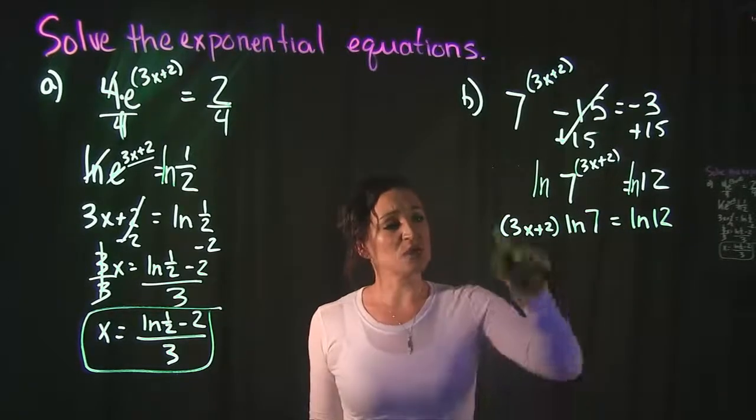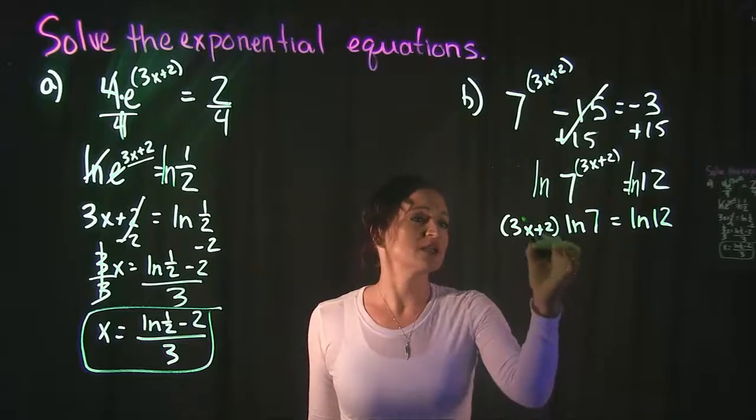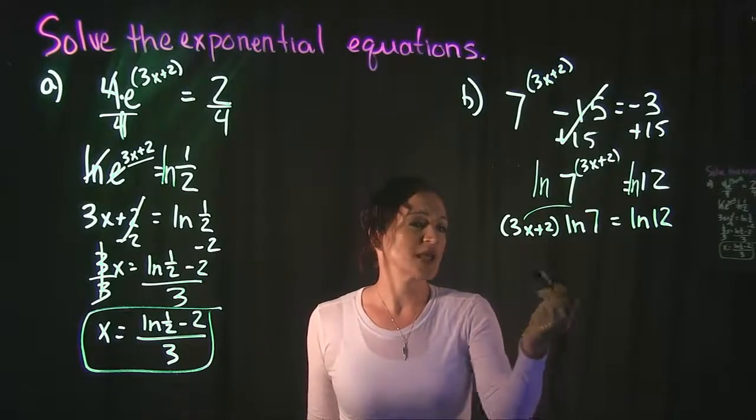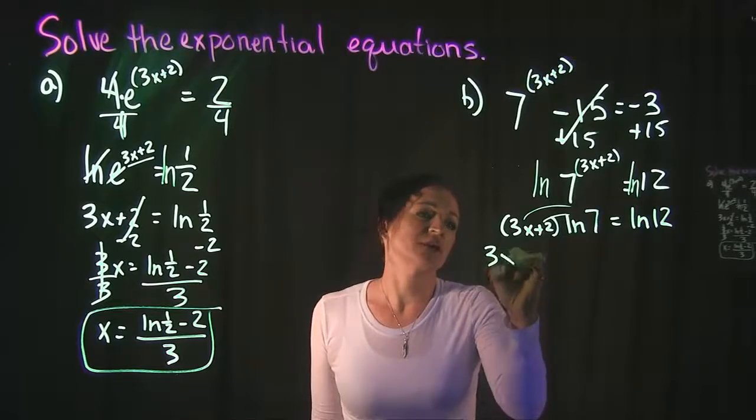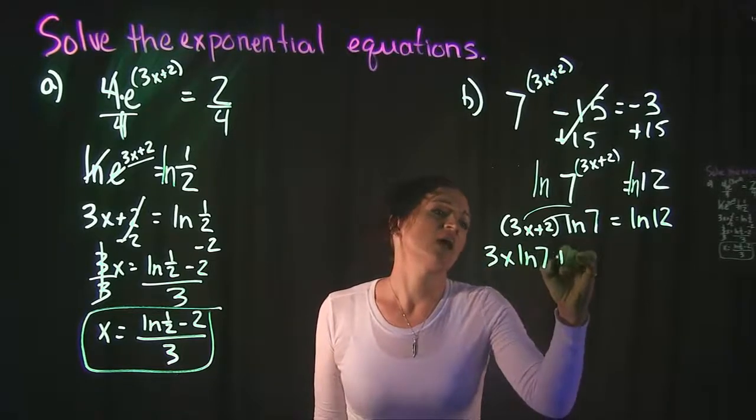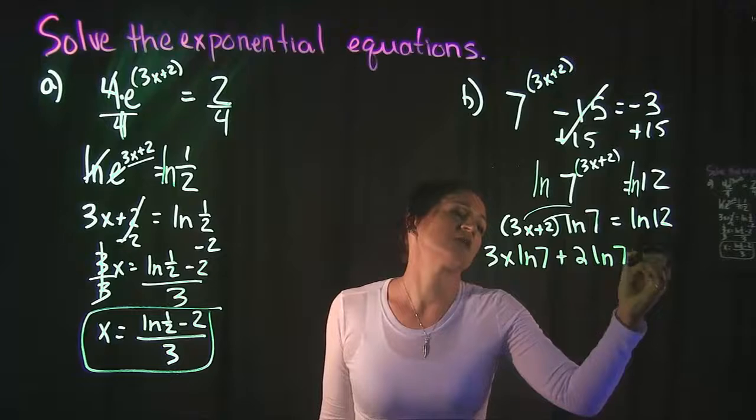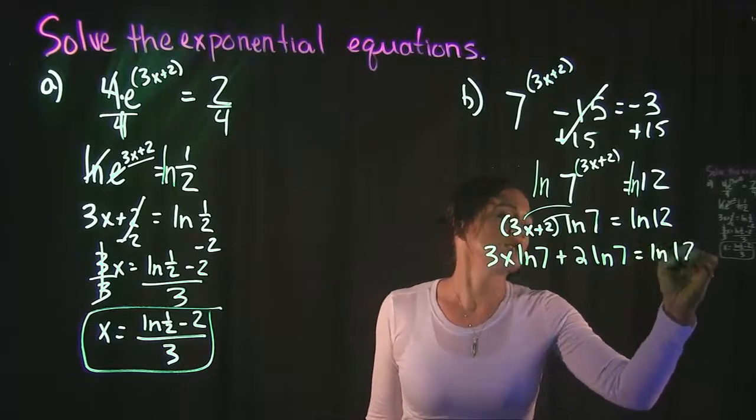So then what we need to do is multiply this out. We need to distribute. Take 3x times ln 7, take 2 times ln 7. So that gives us 3x ln 7 + 2 ln 7 = ln 12.